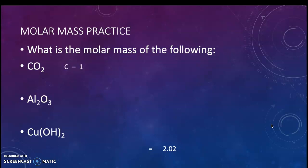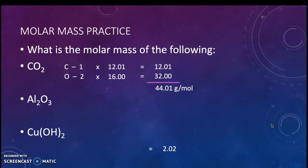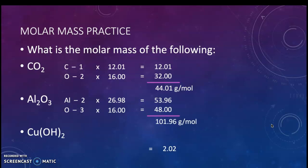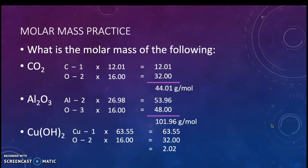Hopefully you went through the answers. For CO2: one carbon times 12.01 equals 12.01, plus two oxygens times 16 equals 32 — total is 44.01 grams per mole. For Al2O3: two Al's times 26.98 equals 53.96, plus three O's times 16 equals 48 — total is 101.96 grams per mole. For CuOH2: one Cu times 63.55 equals 63.55. The OH is in parentheses with a 2 outside, so that applies to both O and H — two O's times 16 is 32, two H's times 1.01 is 2.02 — total is 97.57 grams per mole.